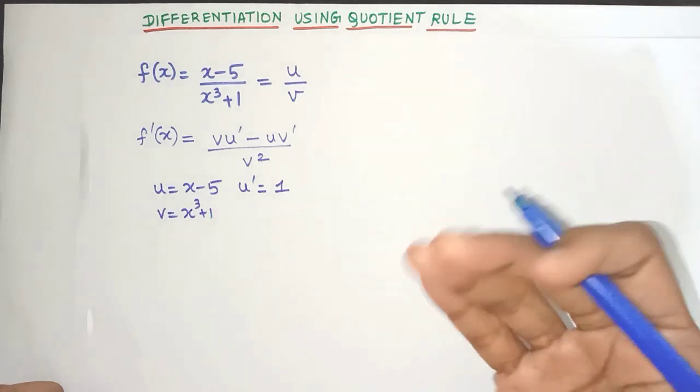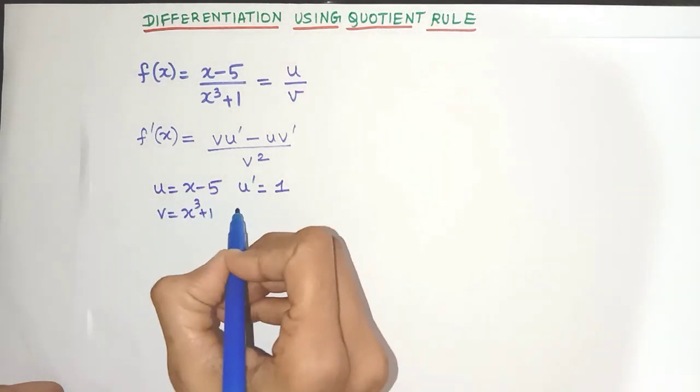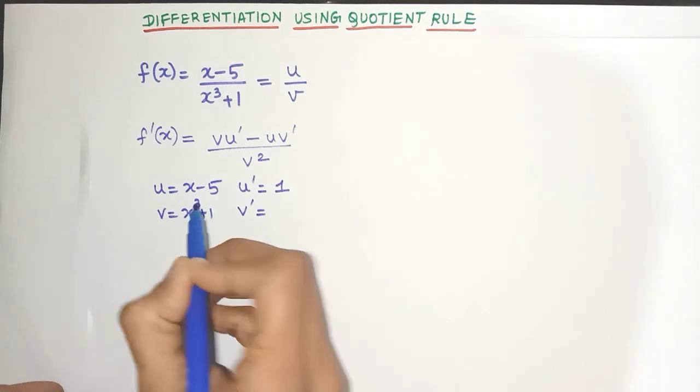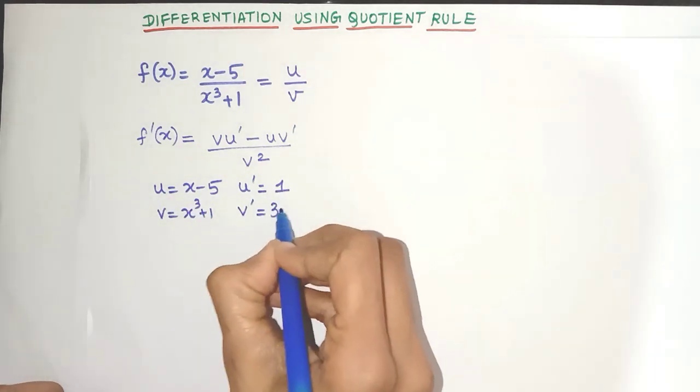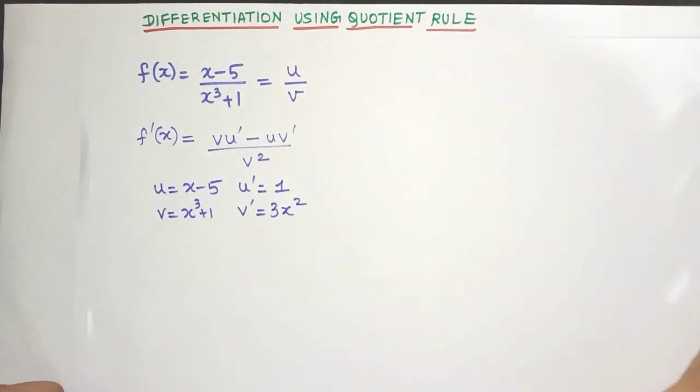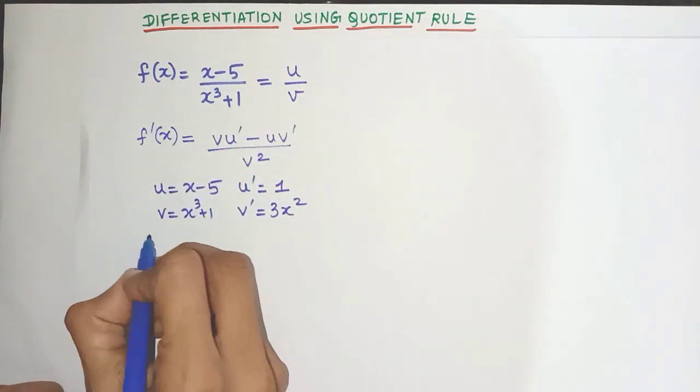Later if you want you can even do it directly. Now let's find the derivative of v. So x cube the derivative will be yes 3x square and derivative of 1 is anyways 0. That's it. We have got all the values. So let's substitute it here.